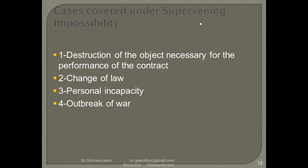Cases covered under supervening impossibilities include: destruction of the object necessary for performance of the contract; change of law; personal incapacity — the person is unable to perform; outbreak of war; and natural calamities. Under these conditions, the contract is impossible to complete. Cases not covered by supervening impossibilities include: difficulty of performance — there are problems but performance can still happen; commercial impossibility; impossibilities due to behavior of a third party; self-induced impossibilities — where the person himself believes the contract cannot happen; and strikes, lockouts, and civil disturbances — under these conditions the contract will still be fulfilled.